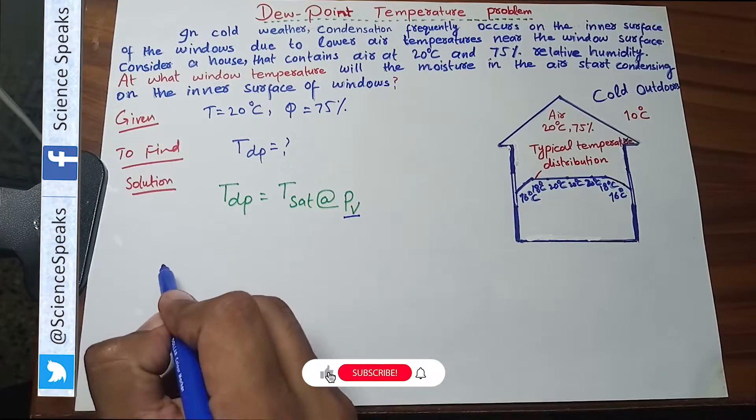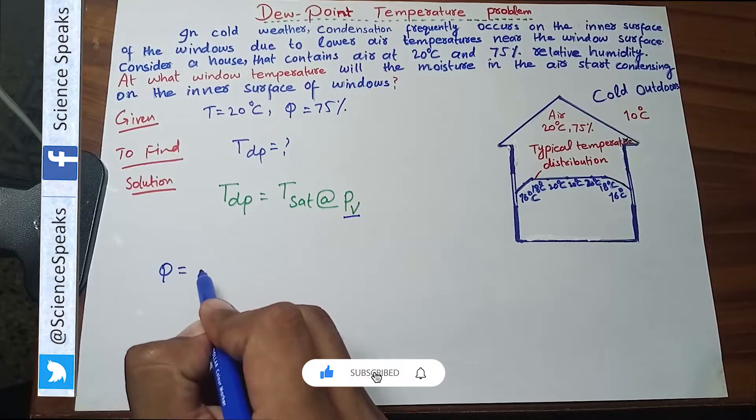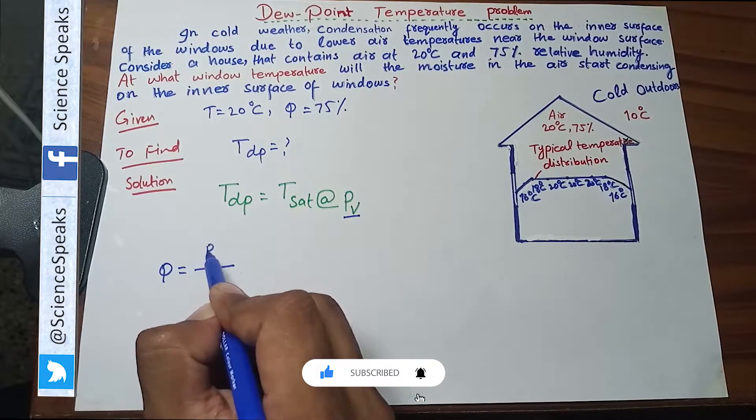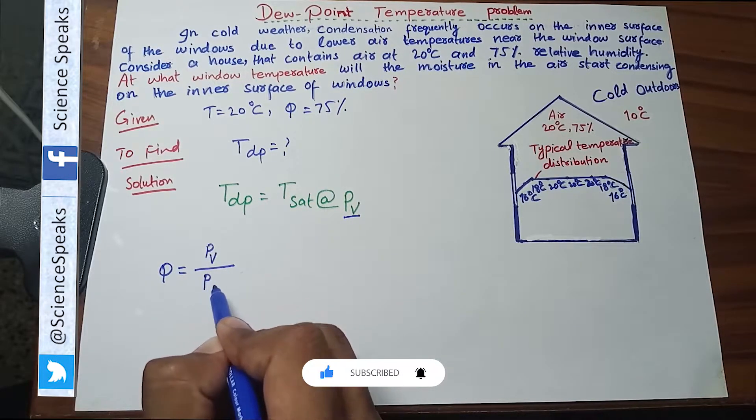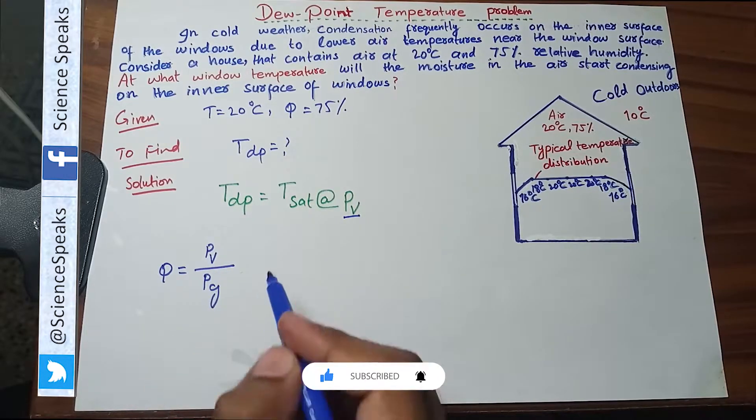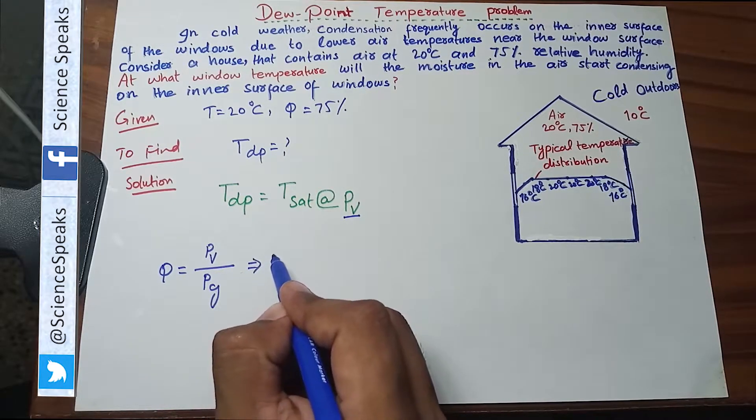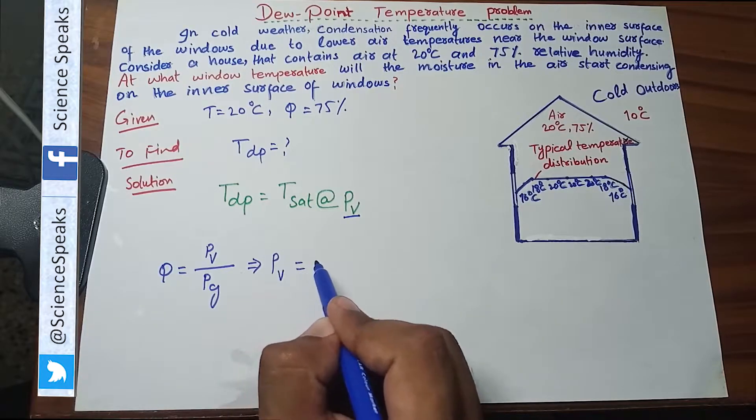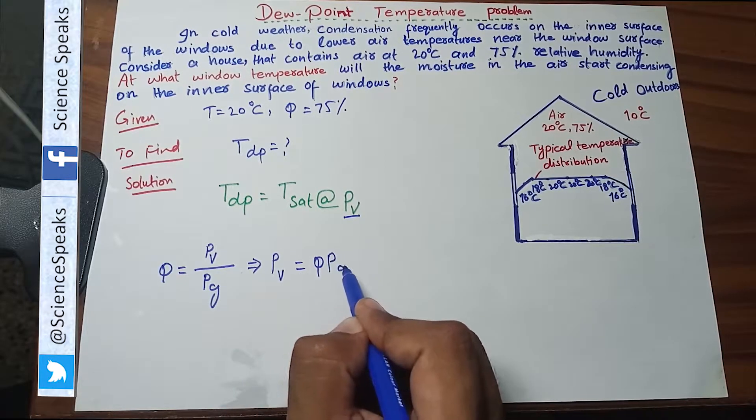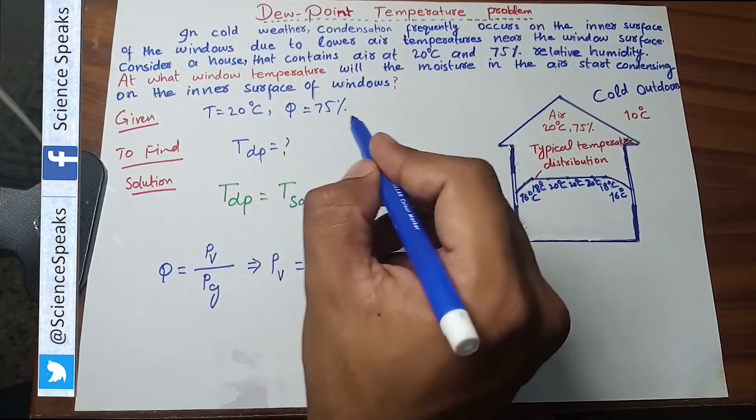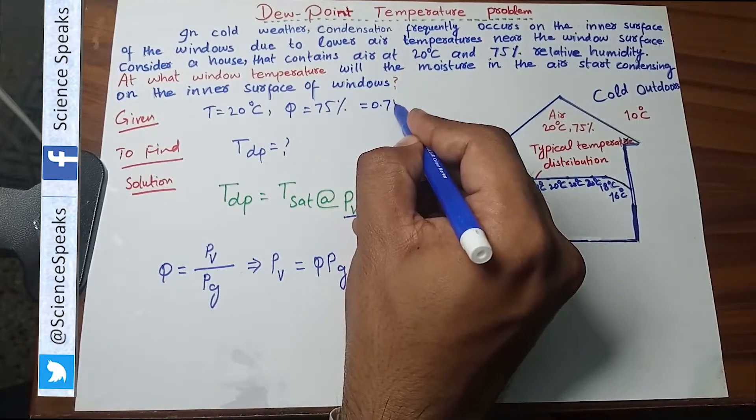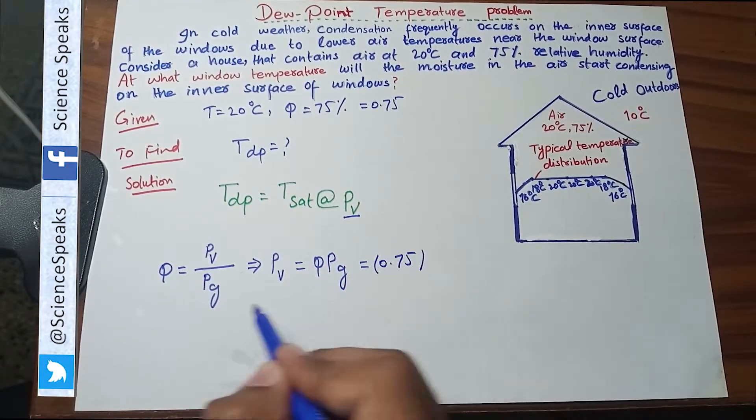To find vapor pressure I will use the relation of relative humidity. Relative humidity is given by PV over PG, vapor pressure over saturation pressure. I need vapor pressure here. PV will become φ times PG. φ the value of relative humidity 75 percent I can write it as 0.75 times PG.